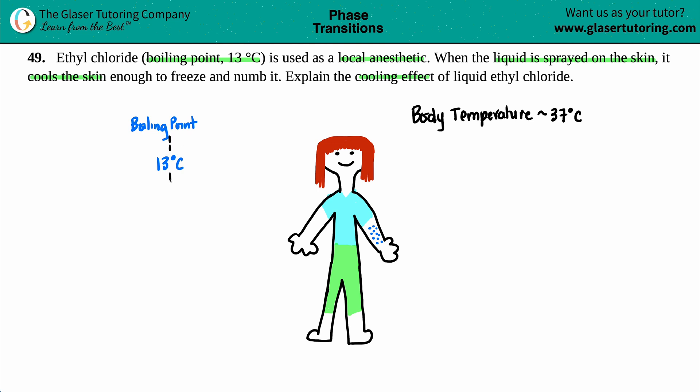Anything below 13 degrees Celsius is going to be a liquid until it reaches its melting point. Anything above 13 degrees Celsius is going to be a gas, because 13 degrees Celsius is the conversion between the liquid converting into its gas.